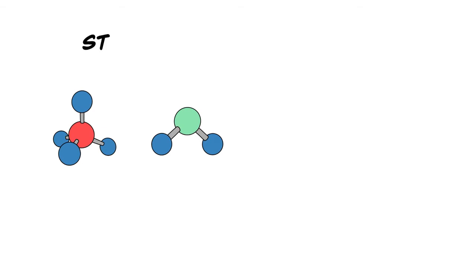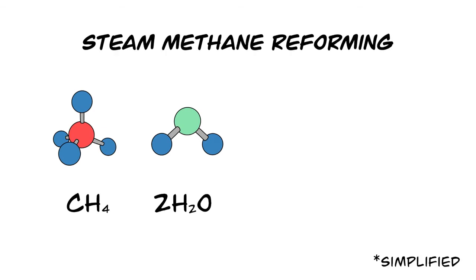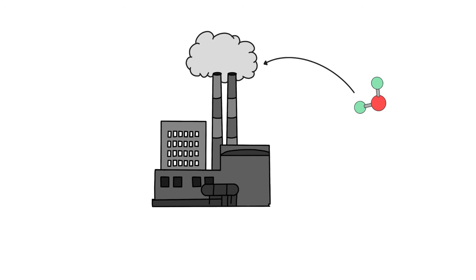One of them is called steam methane reforming. By burning methane, the molecule reacts with water and is then divided into hydrogen and carbon dioxide. When the carbon dioxide is emitted into the atmosphere, it's called grey hydrogen.